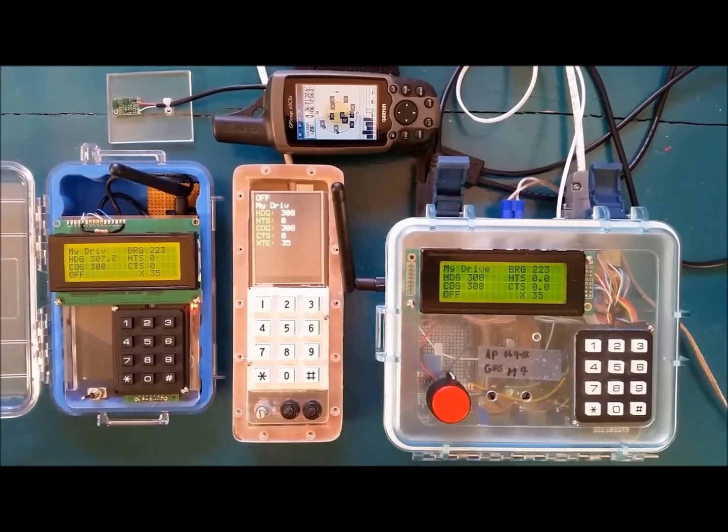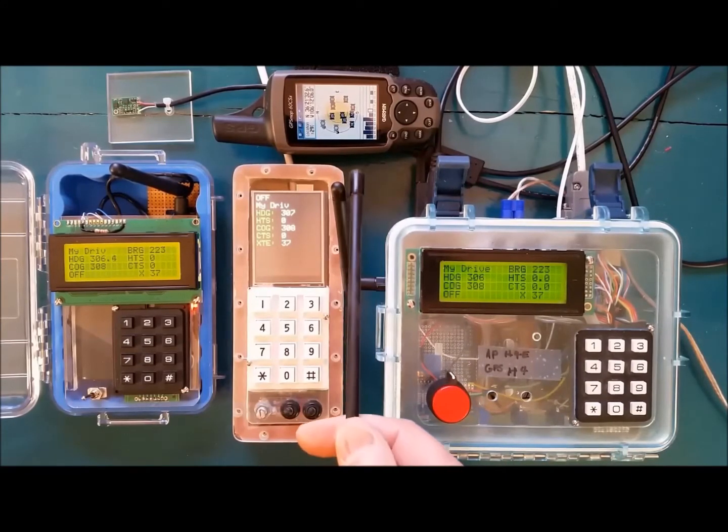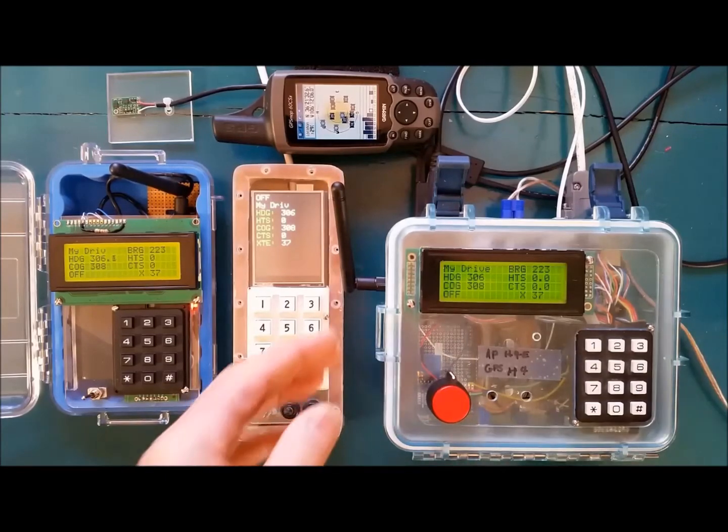What I'd like to show you this morning is an updated status of the major components of the Autopilot system. First of all, this is the main Autopilot unit. It has an LCD and a keypad. It also has this RF Wi-Fi remote antenna inside.